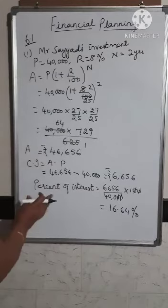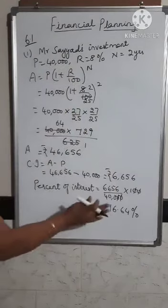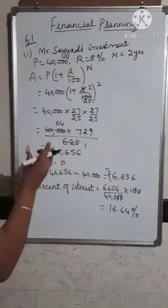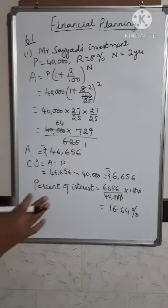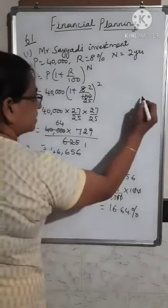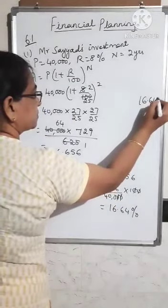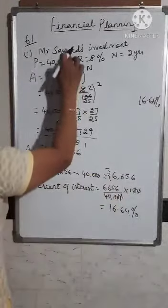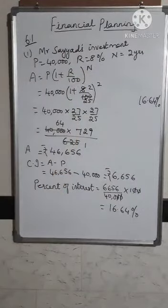So 16.64% is the percentage of interest that Syed gets. I'll note this at the side — 16.64% — and now find out what profit Mr. Fernandez gets. The second part is for Fernandez.